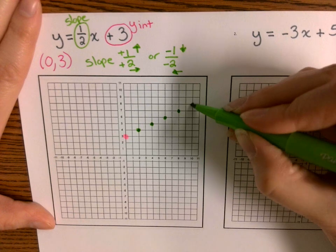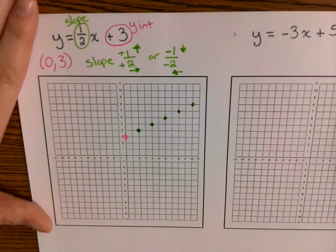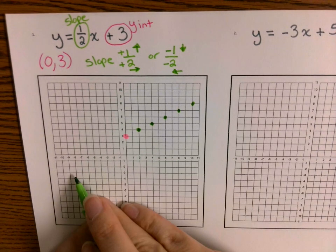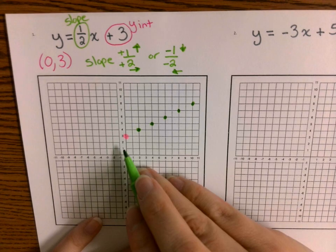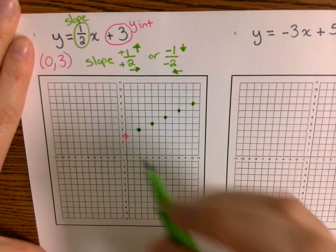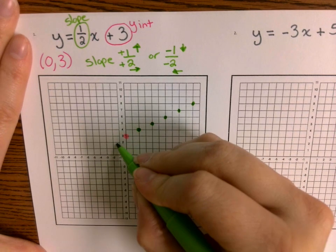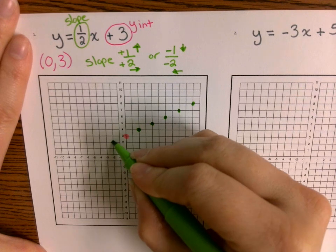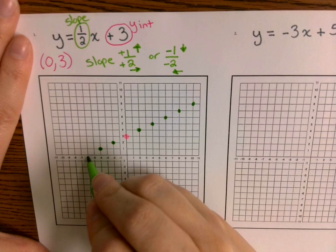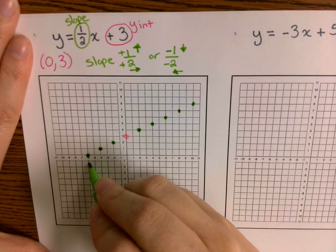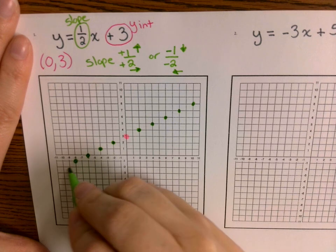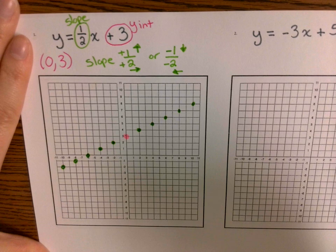But I can go in the opposite direction. Instead of up one, right two, I follow down one, left two. Down one, left two takes me to (-2, 2). Down one, left two takes me to (-4, 1). Down one, left two takes me to (-6, 0). Down one, left two takes me to (-8, -1). And down one, left two takes me to (-10, -2). So I now have all of these points plotted.